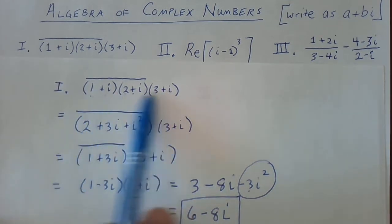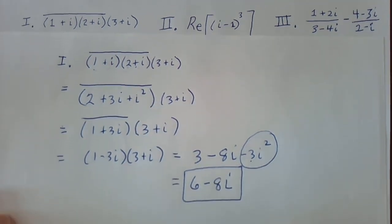So this product looks a little complicated. It simplifies to 6 minus 8i.